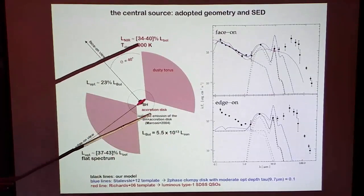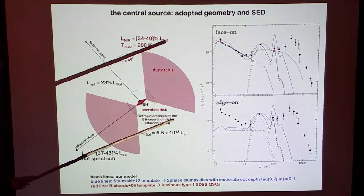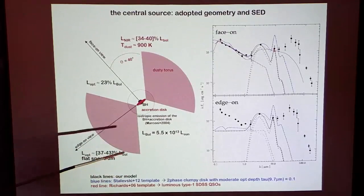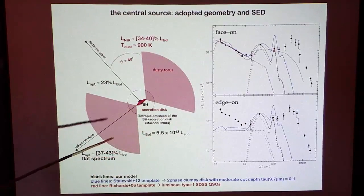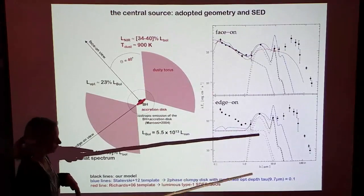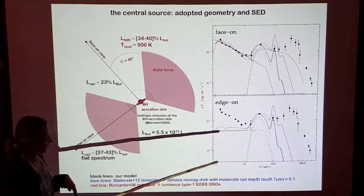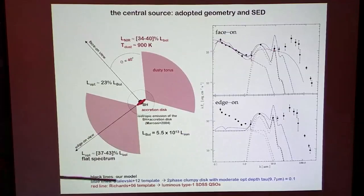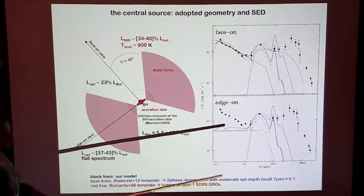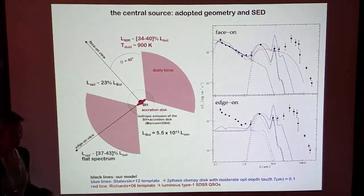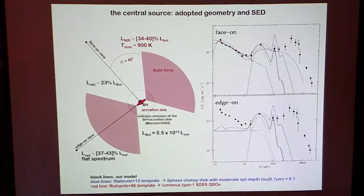This near-infrared component is about 40% of the bolometric luminosity, and there is a fraction of the optical luminosity that can escape even in the edge-on direction — the flat component. In decomposing this intrinsic spectrum we were guided by the full radiative transfer models of Stalevski et al.